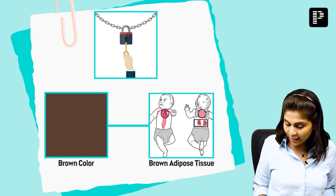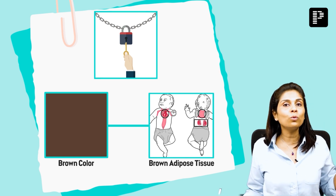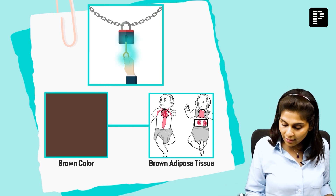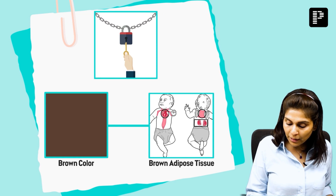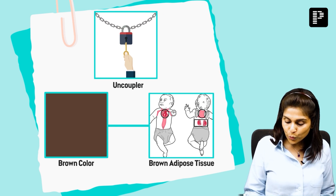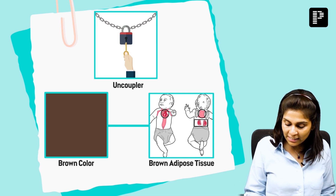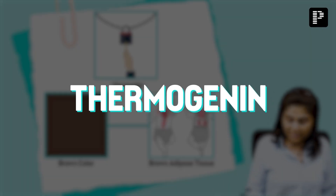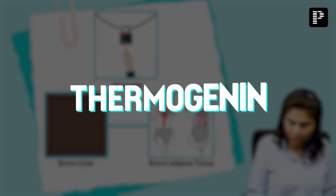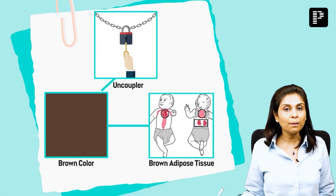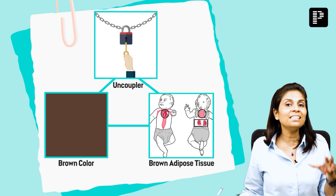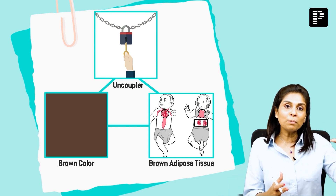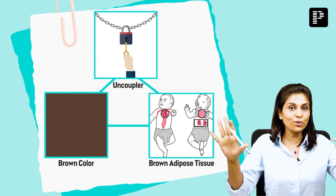We have successfully connected the two images — one is brown color, the other is brown adipose tissue. The third image shows something uncoupling two chains. The uncoupler present in brown adipose tissue is thermogenin. Thermogenin is an uncoupler present in brown adipose tissue which uncouples oxidation from phosphorylation.